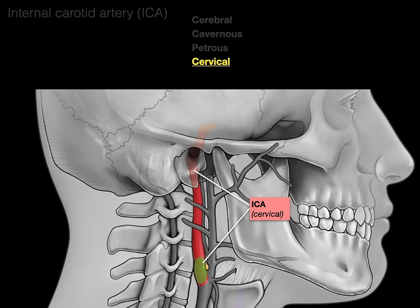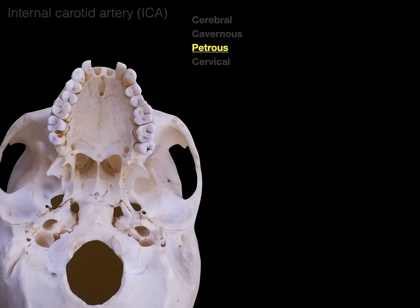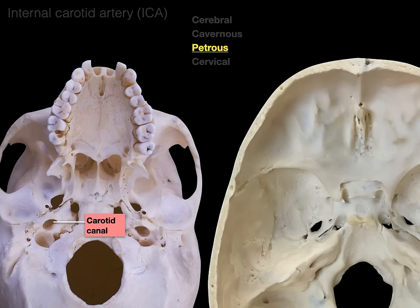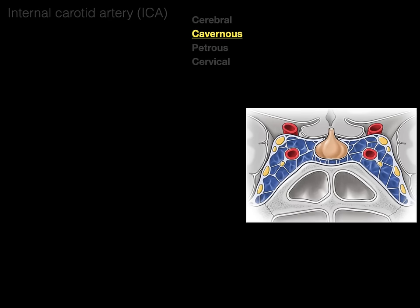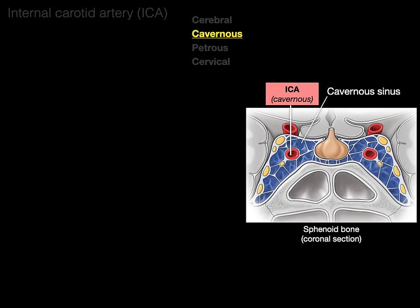The cervical part of the internal carotid artery is in the neck. The petrous part goes from the carotid canal on the base of the skull to the carotid canal in the middle cranial fossa. The cavernous part is within the cavernous sinus — shown in a coronal section where the blue cavernous sinus flanks either side of the pituitary. This is the only place in the body where you see an artery inside of a vein.